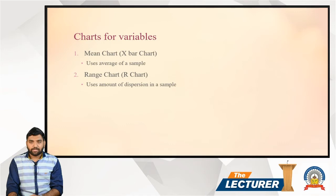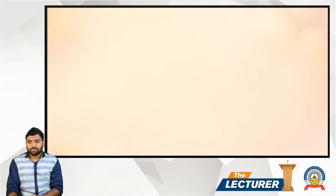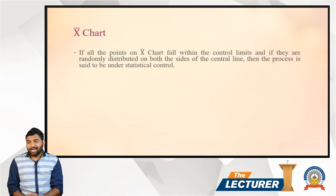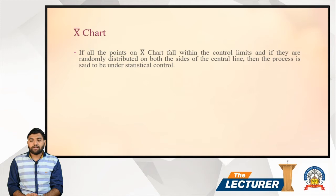In the X-bar chart, if the points on the X-bar chart fall within the control limits and if they are randomly distributed on both sides of the central line, then the process is said to be under statistical control.